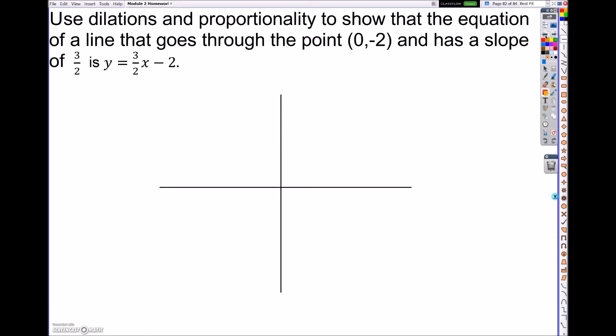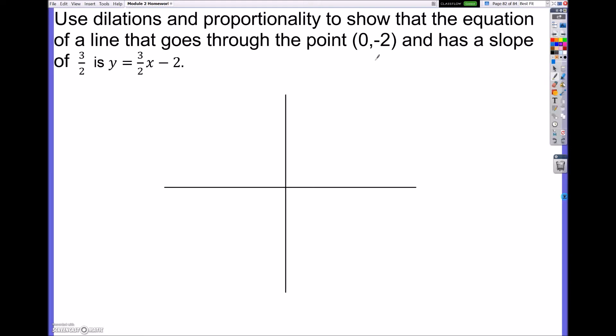So let's go ahead and look at this one. It says use dilations and proportionality to show that the equation of a line that goes through the point 0, negative 2 and has a slope of 3 over 2 is the equation y equals 3 over 2x minus 2. Now today I'm only going to be going over one of these. So I'm going to show you how to derive the y equals mx plus b.